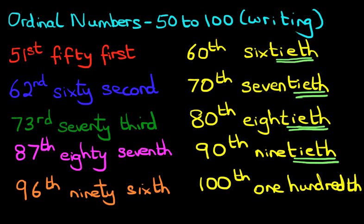All the others, whether it's the 20th, 30th, 40th, 50th, 60th, 70th, 80th, 90th, all of them end with T-I-E-T-H. The only different one is 100th. So that is how we write ordinal numbers up to one 100th.